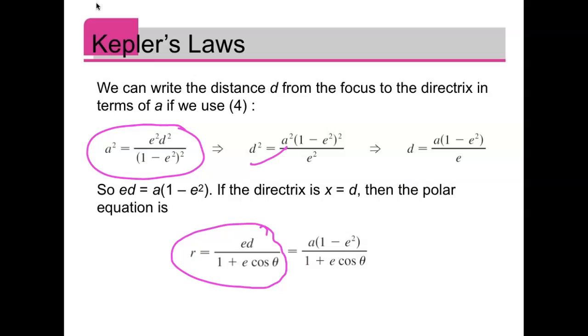And so all we're doing is a little bit of algebra here. This step, they just swapped places with a and d. And then taking the square root, we end up with d equals a times 1 minus e squared over e. And then you can multiply e to the other side to get ed equals a times 1 minus e squared.